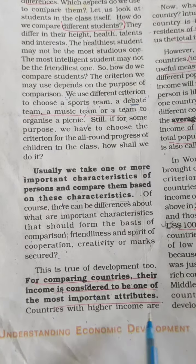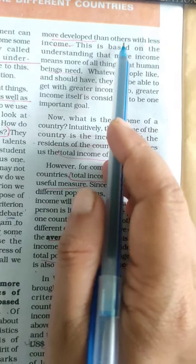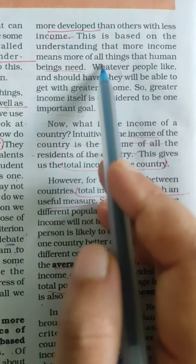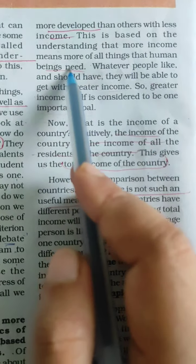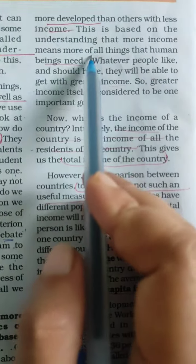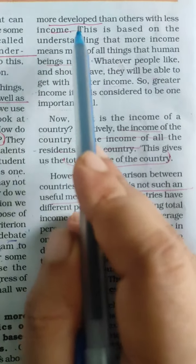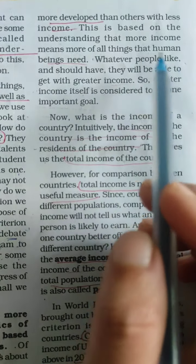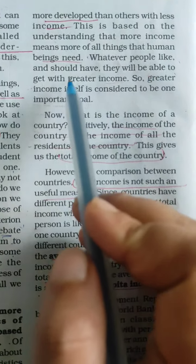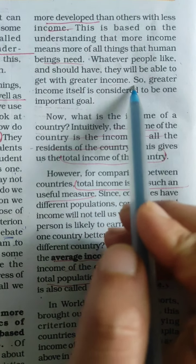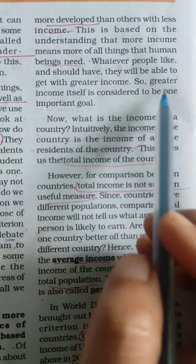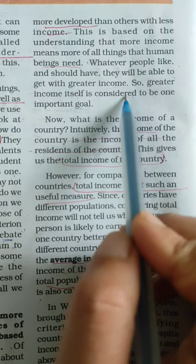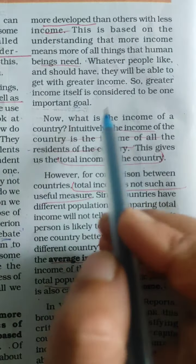Countries with higher income are more developed than others with less income. This is based on the understanding that more income means more of the things that human beings need. Why is income considered the most important thing? Because more income means a better living standard. Whatever people like and should have, they will be able to get with greater income. So greater income itself is considered to be one of the important goals of our lives. Thank you, guys.